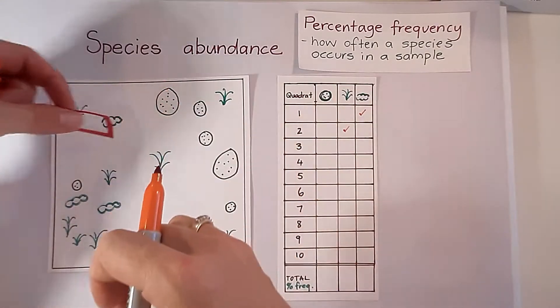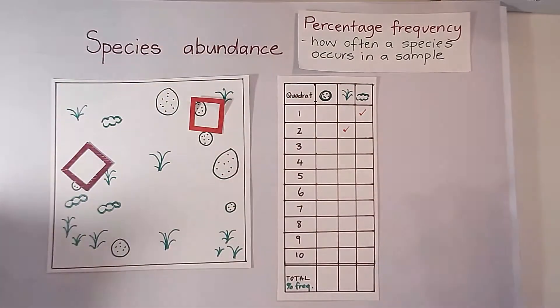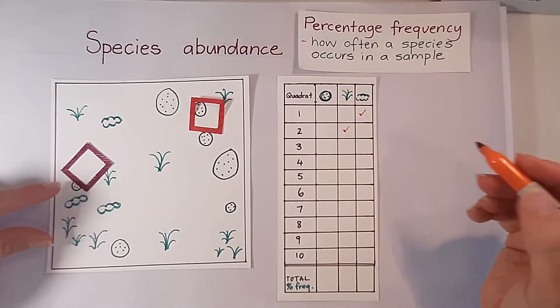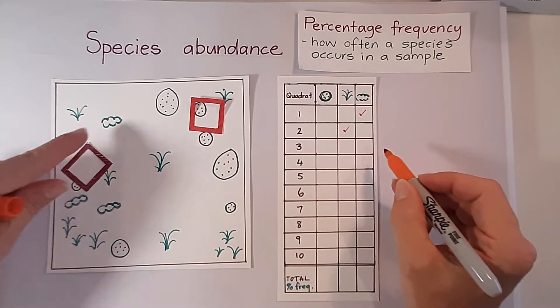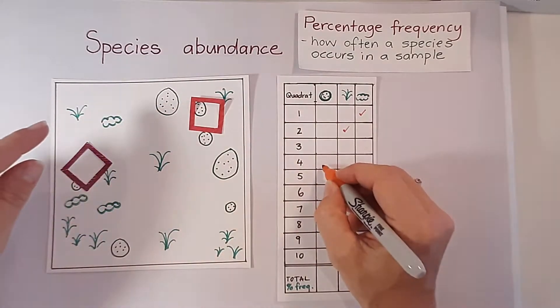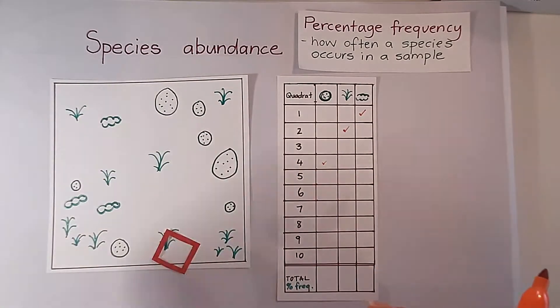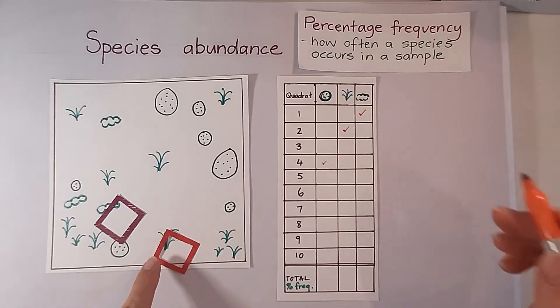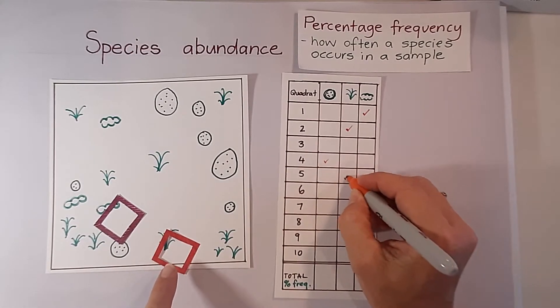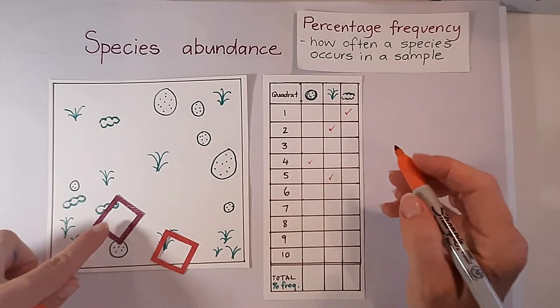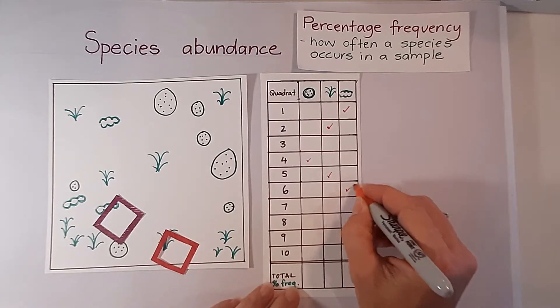If we throw the quadrats out again randomly and we do the next one, there was nothing in quadrat three. In quadrat four we only have this sample. Close our eyes and throw them again. This time we have a little bit of this one. Over here we have a small bit of that sample.